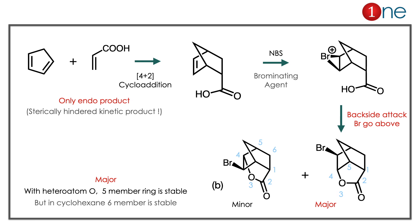Two important learnings from question 2: First, [4+2] cycloaddition always favors the endo product, even though it is sterically hindered and kinetic. Second, with a heteroatom, the 5-membered ring is more stable than the 6-membered ring.